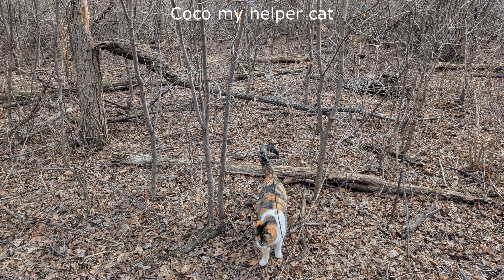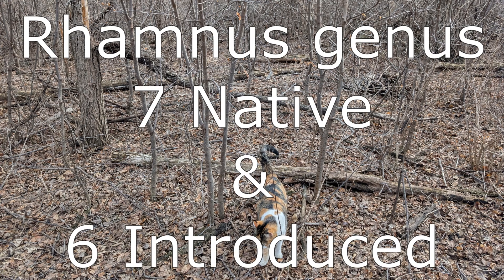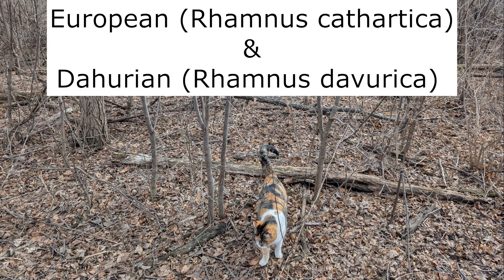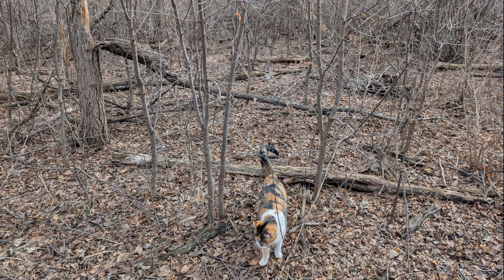Rhamnus is the genus of buckthorns discussed in this video. There are seven native species and six introduced species in the United States, but this video only covers the two most widespread invasive species. It would be wise to learn which species are found in your area — you can consult the range map for Rhamnus in the video description.